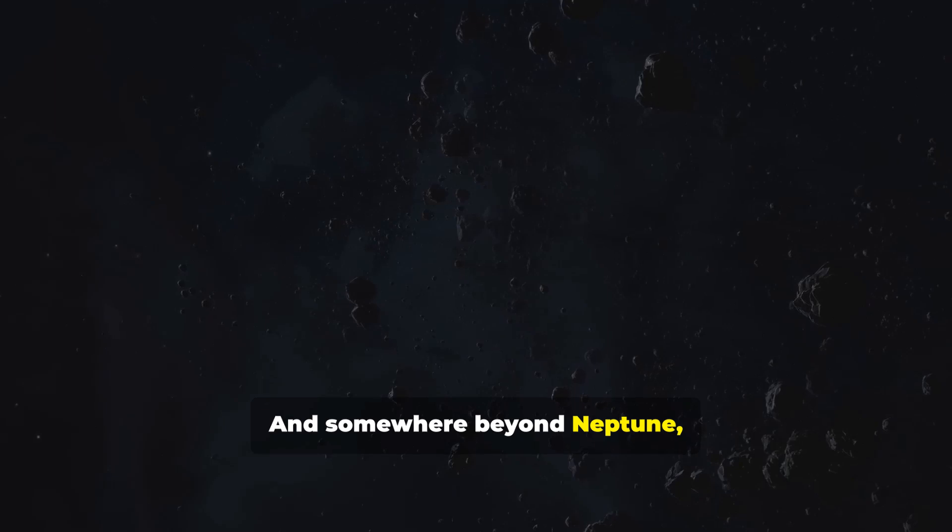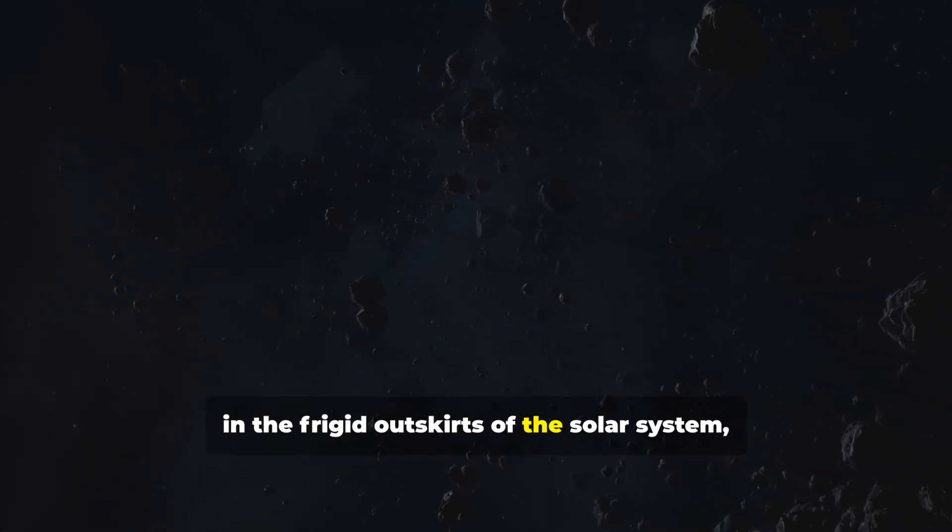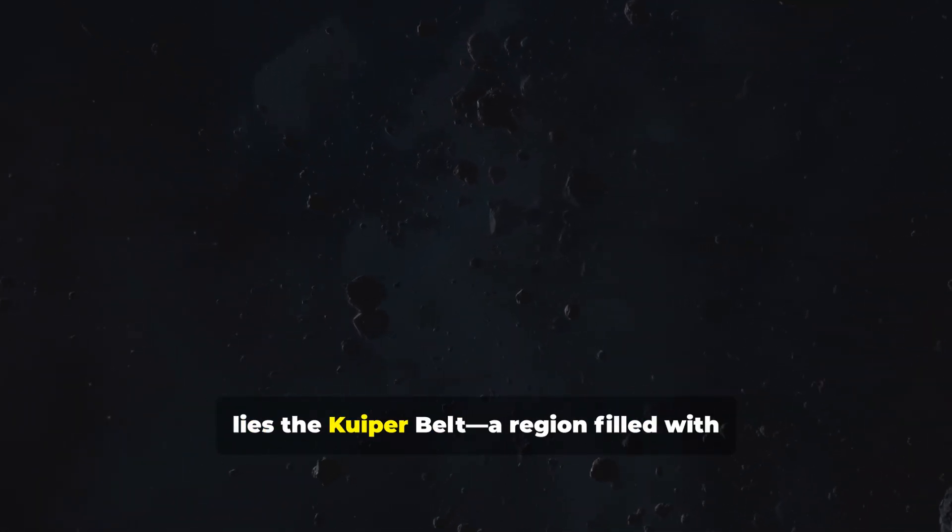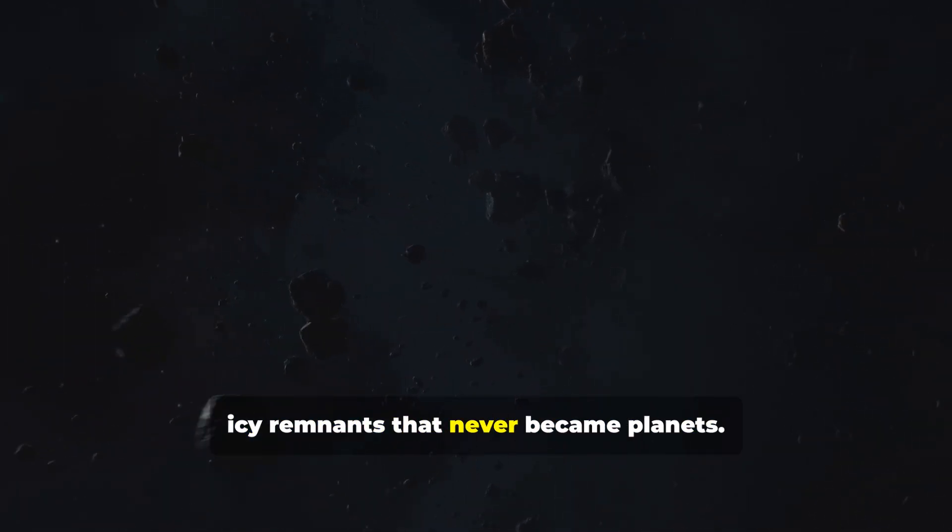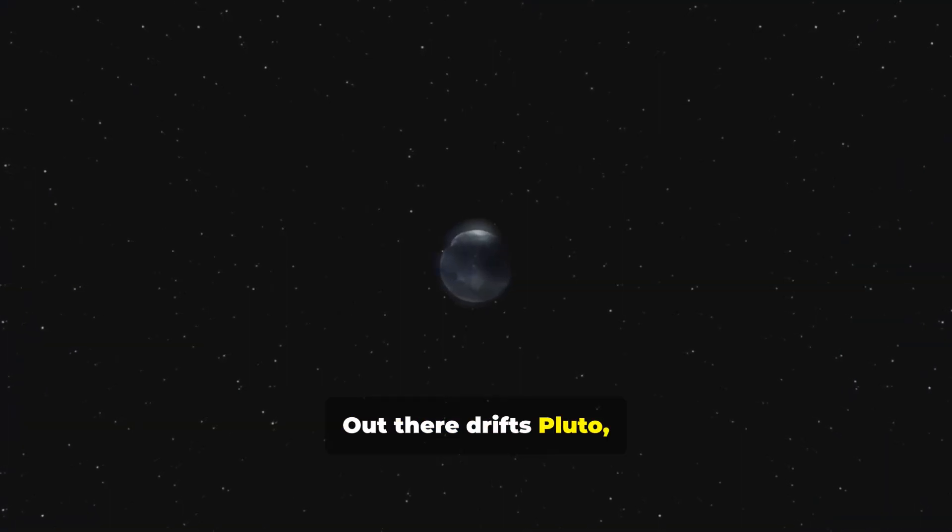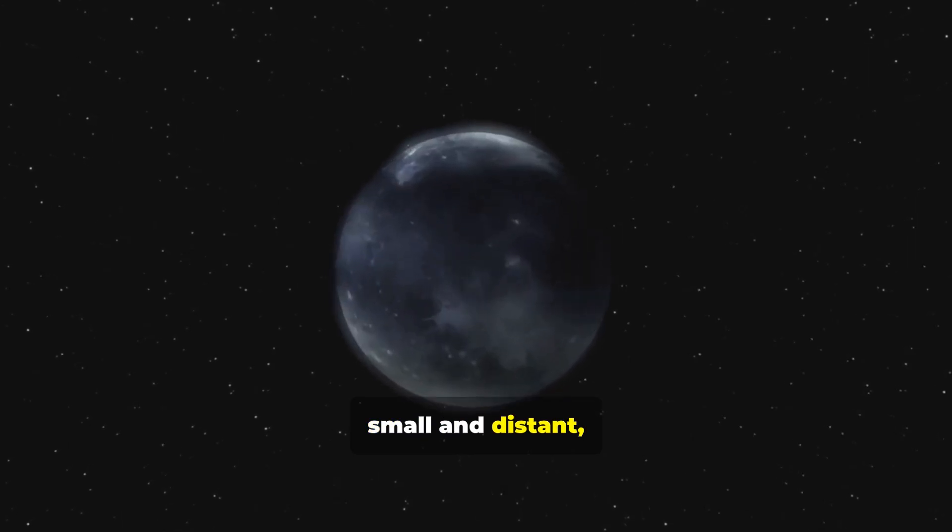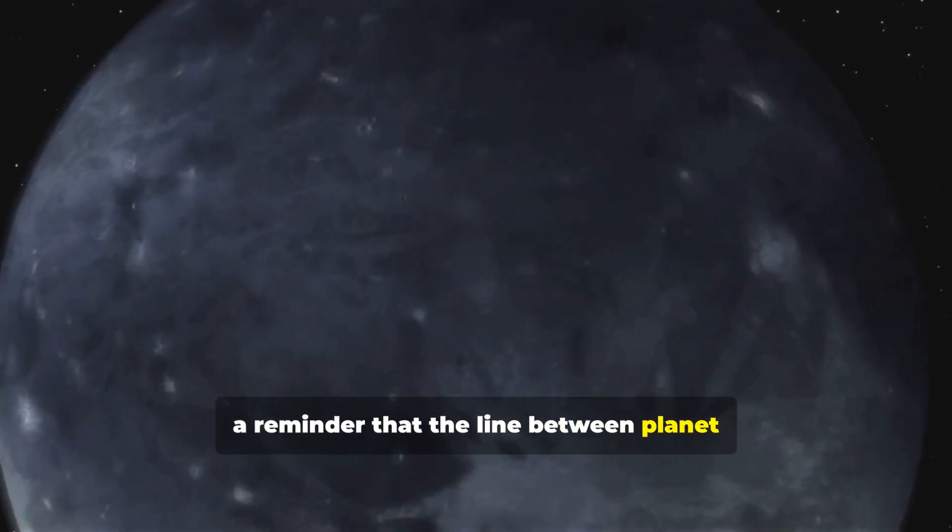And somewhere beyond Neptune, in the frigid outskirts of the solar system, lies the Kuiper belt. A region filled with icy remnants that never became planets. Out there drifts Pluto, small and distant. A reminder that the line between planet and leftover is sometimes blurred.